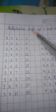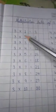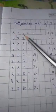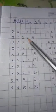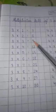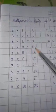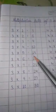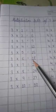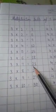Now, let's come to the multiplication table of 3 and 4. Now, let's read the table of 3. 3×1 is 3. 3×2 is 6. 3×3 is 9. 3×4 is 12. 3×5 is 15. 3×6 is 18. 3×7 is 21.